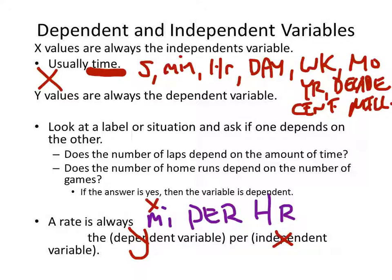Per independent variable, which is X. So, in other words, miles is Y, hours is X. So, just by looking at the labels, we can determine if something is dependent or independent. It's dependent per independent. So, Y per X.